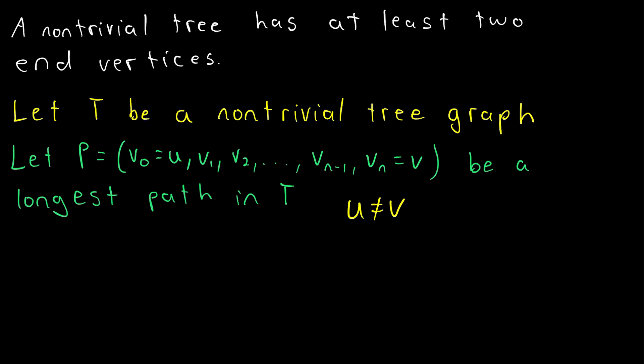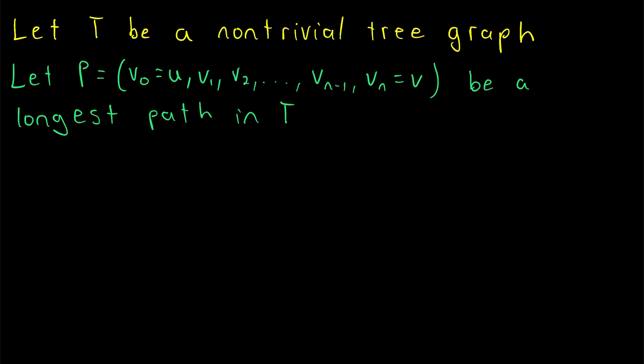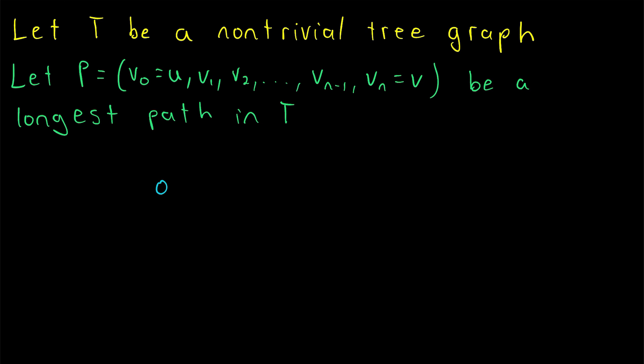This is important, of course, because it means if we can show that both U and V have a degree of one, then we have shown that the graph has at least two end vertices. That's exactly what we're going to do. To explain the rest of the proof, I think a simple diagram will suffice.